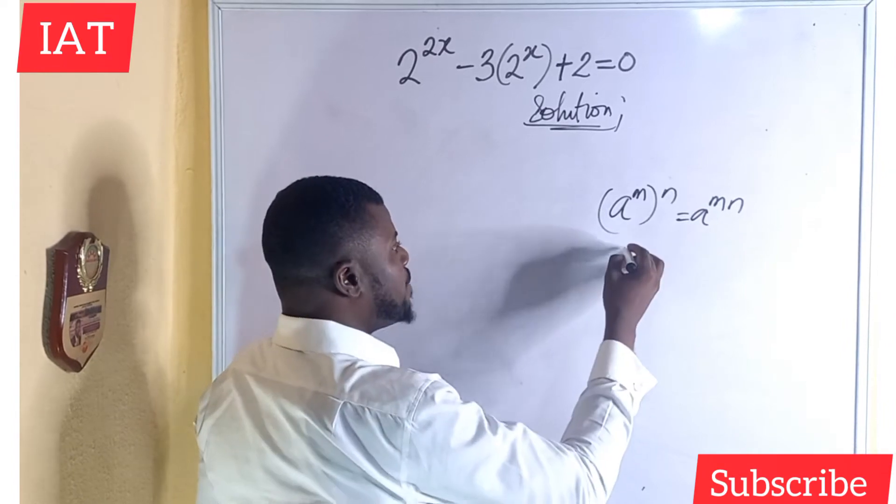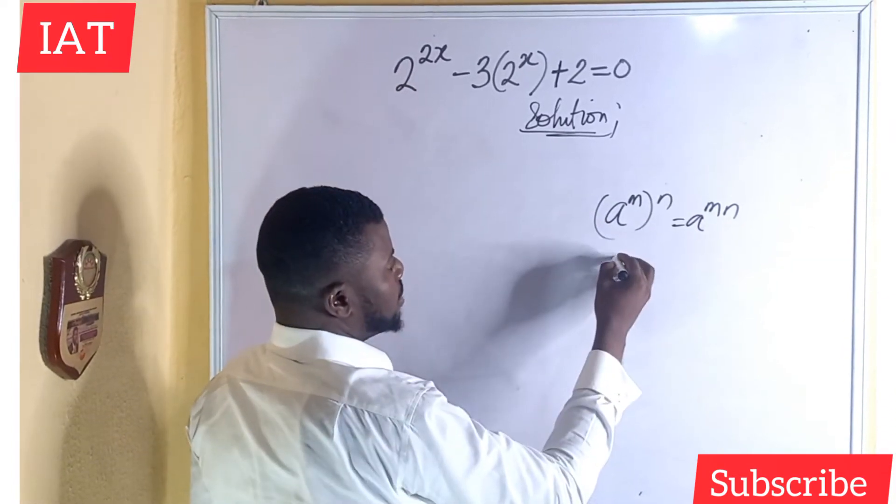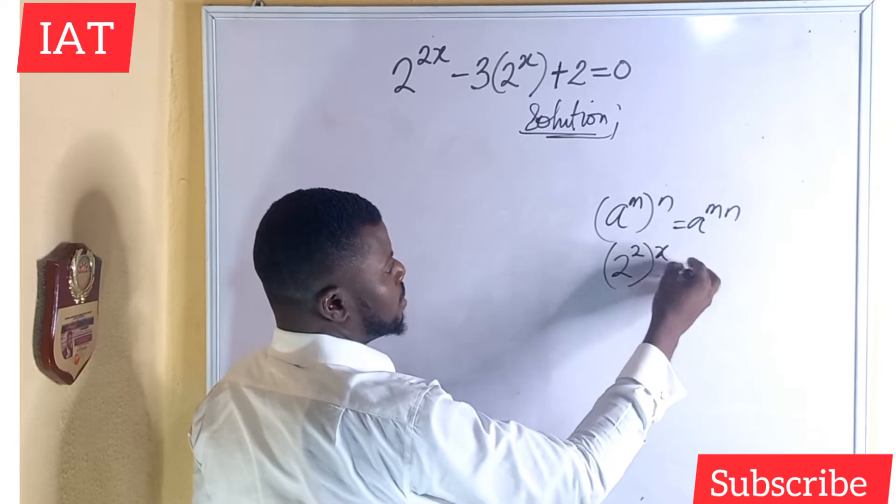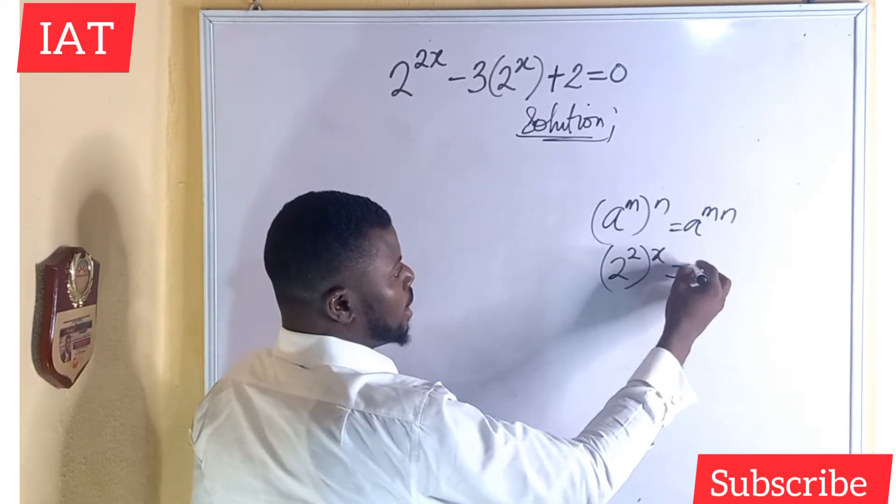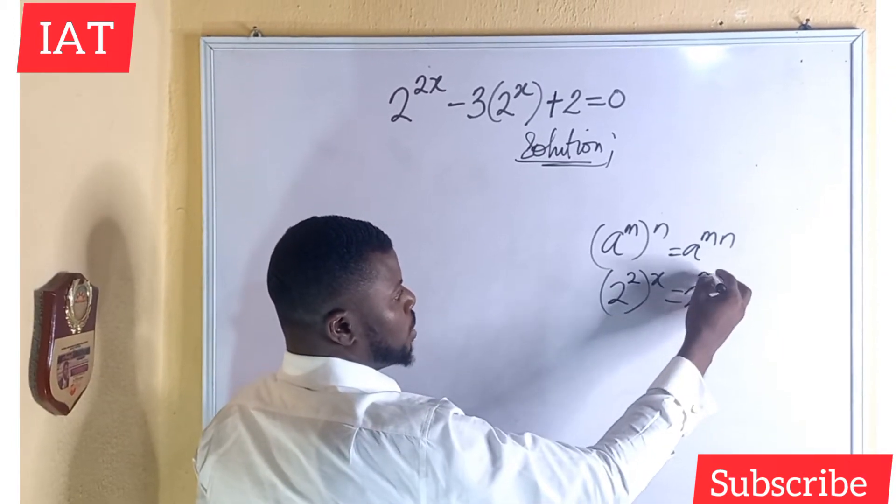Similarly, if I have this expression like this, 2 to the power of 2x, how we got this was just like this from this law. And this expression became 2 times x is 2x.